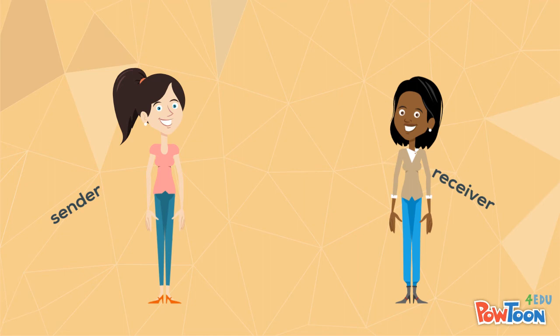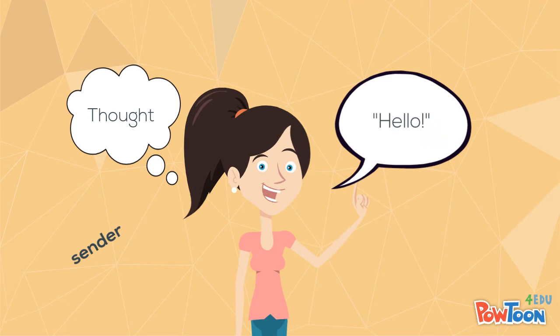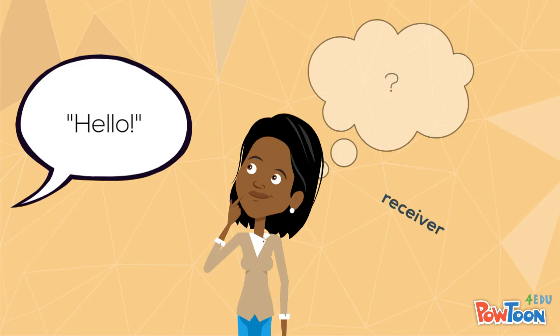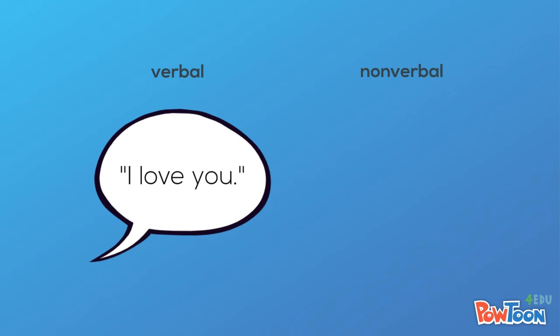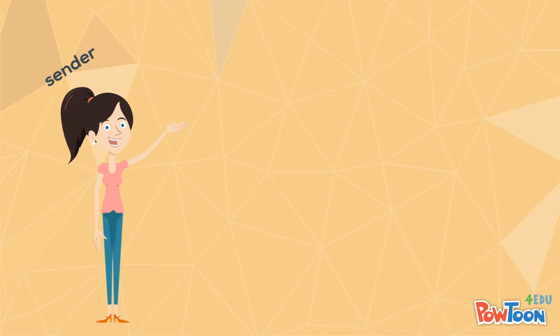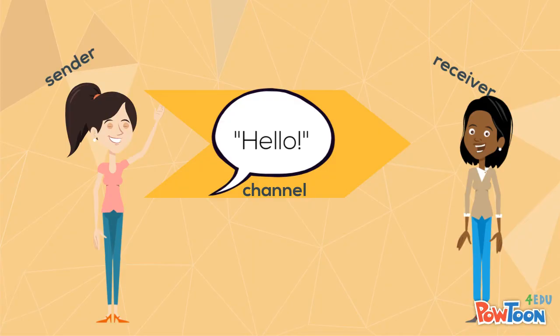The sender encodes by translating thoughts into messages — this is typically the person who speaks. The receiver decodes by interpreting the messages. Messages can be verbal, like saying the words 'I love you,' or nonverbal, such as giving someone a hug. The sender sends a message to the receiver via a channel, which is the way the message was sent.